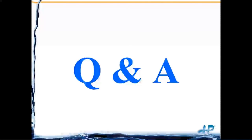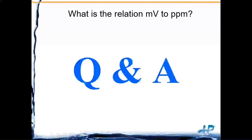Process analyzers is an always-changing world. If I don't know an answer I'll be honest, but I'll always find the answer and get it to you within the next week. First question: what is the relation of millivolts to PPM? That depends on the chemical you're referencing. For chlorine, an ORP value of about 800-825 millivolts would be equivalent to about four to five PPM. There are value charts available for different chemicals.